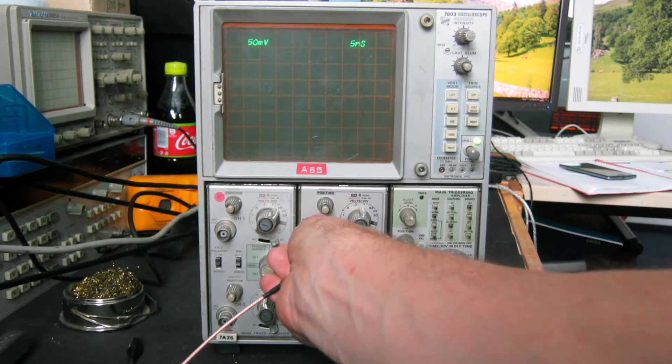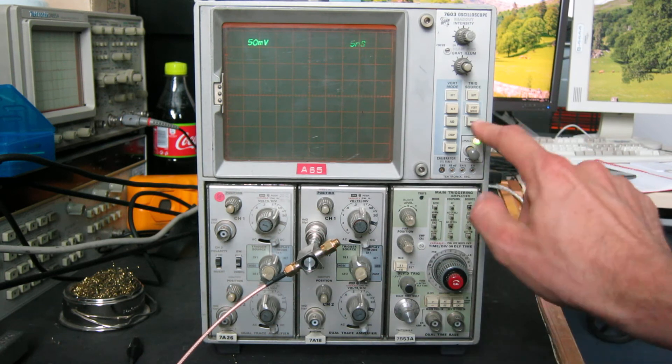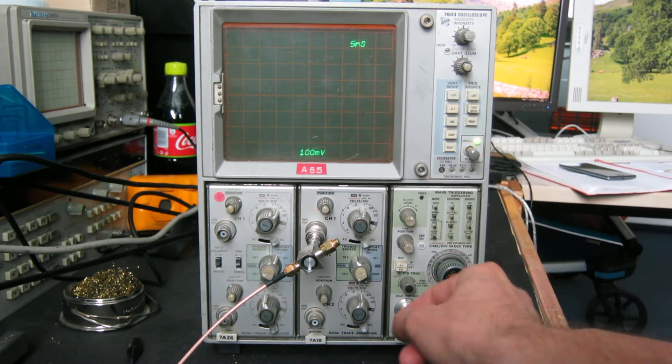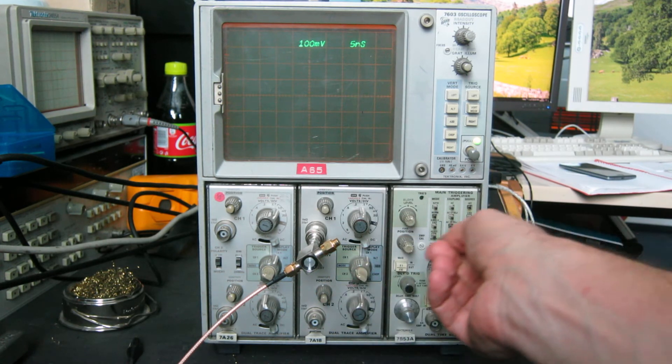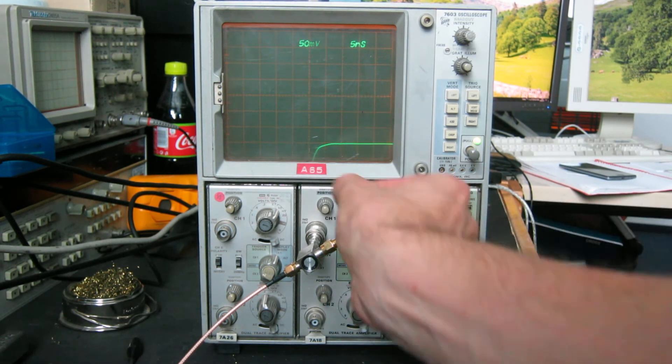The 7A18 plugin, which we'll try over here, if I change to the right vertical mode, change it to that input, trigger source there, 50 milliseconds, there we go.